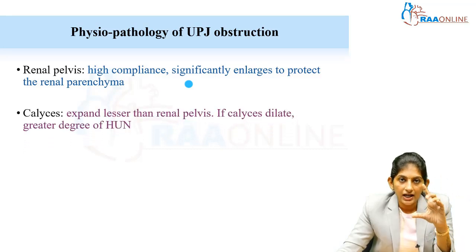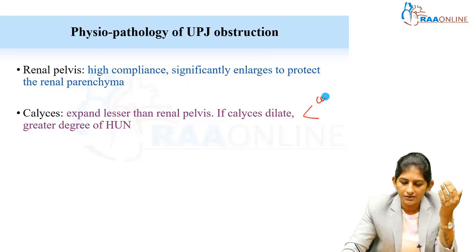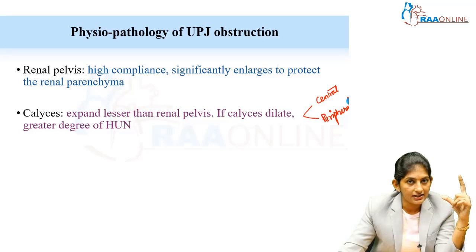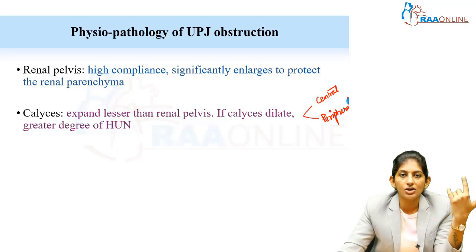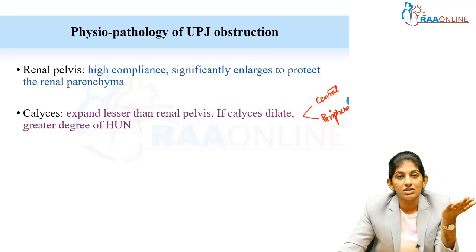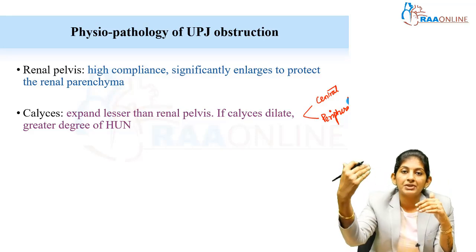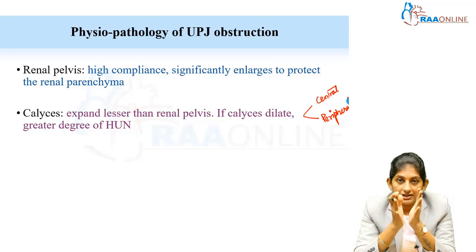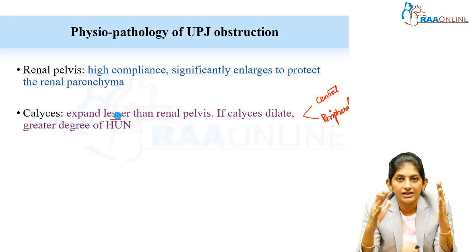After the renal pelvis, we look at the calyces — central and peripheral calyces. Once the renal pelvis dilates, we check whether the calyces are dilated, and if so, whether it is central or peripheral, or major versus minor calyceal dilatation. Peripheral calyceal dilatation places the case into a higher risk category, which we will discuss in the scoring system.